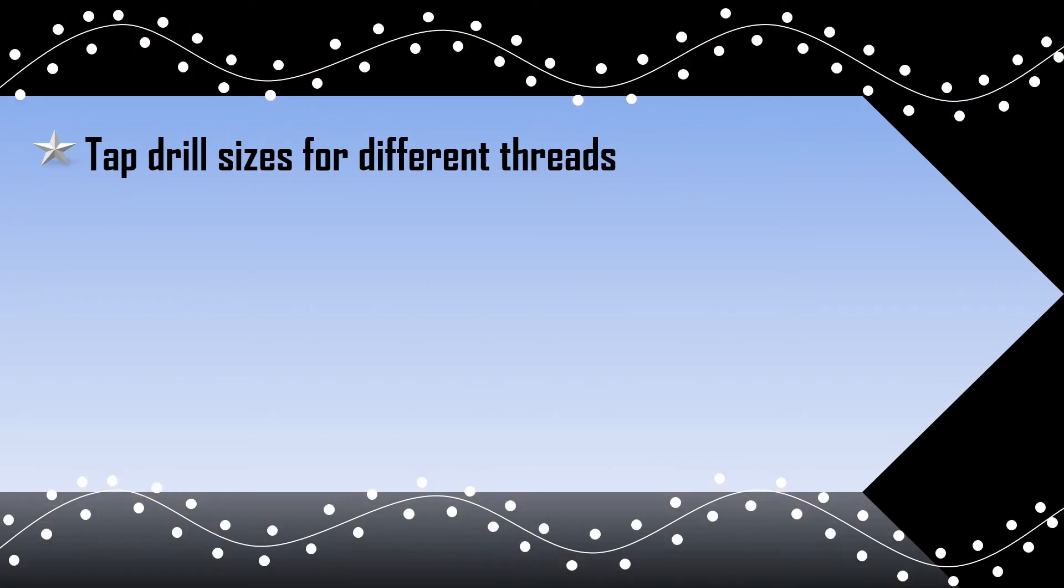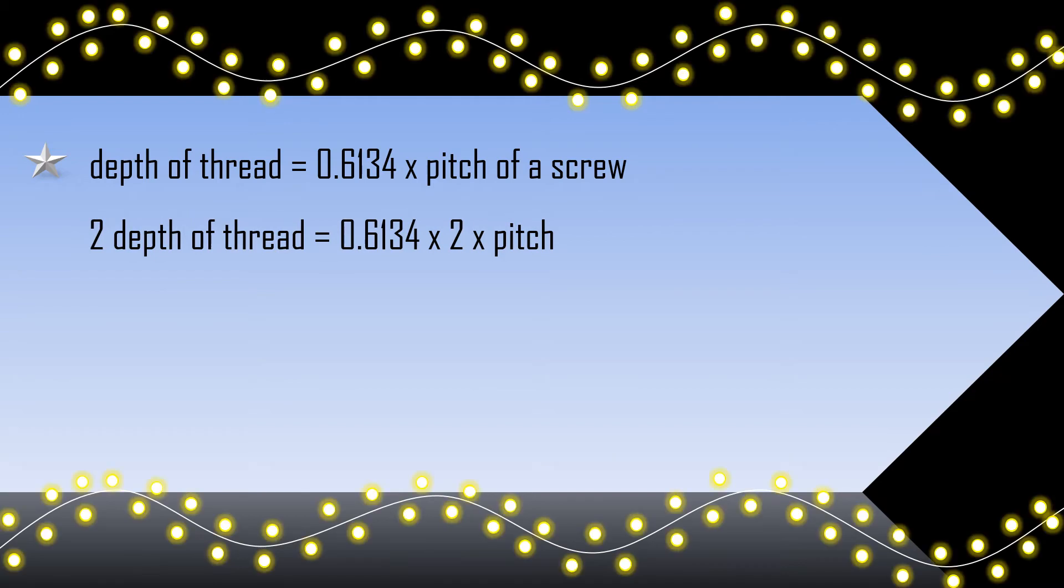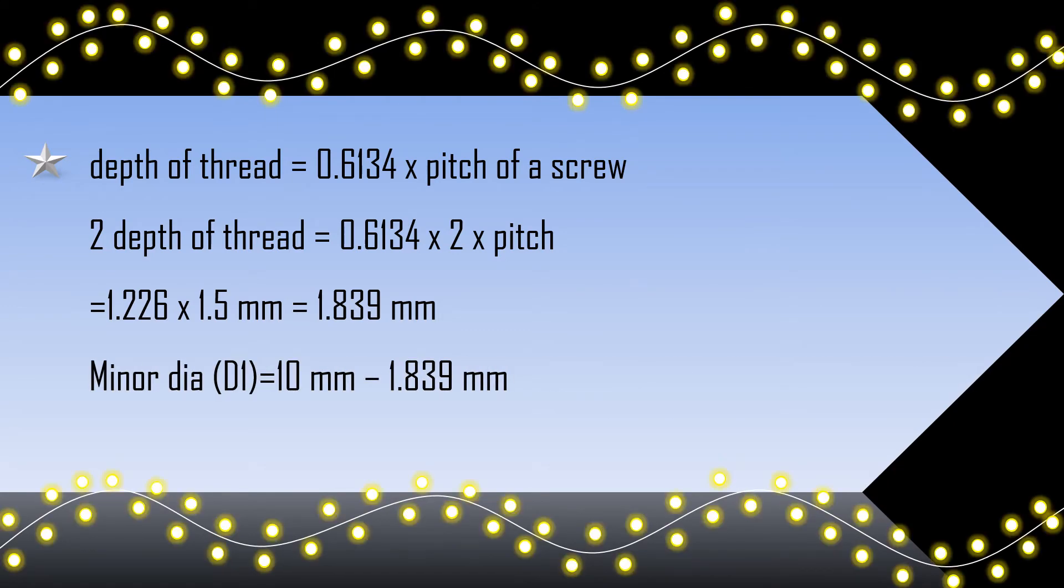Tap drill sizes for different threads. In ISO metric thread, tapping drill size for M10 x 1.5 thread is: Minor diameter equals major diameter minus 2 times depth. Depth of thread equals 0.6134 times pitch of a screw. 2 times depth of thread equals 0.6134 times 2 times pitch, equals 1.226 times 1.5 millimeters, equals 1.839 millimeters. Minor diameter D1 equals 10 mm minus 1.839 millimeters, equals 8.161 mm or 8.2 millimeters.